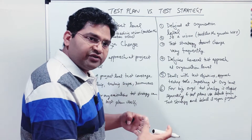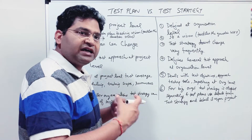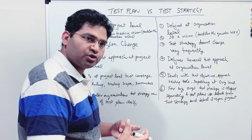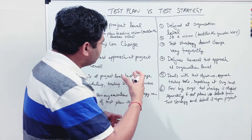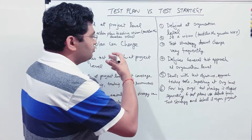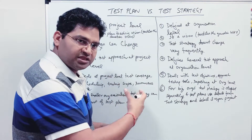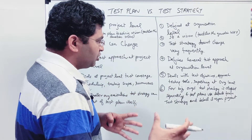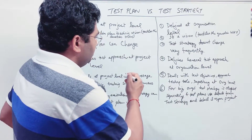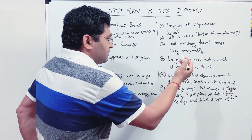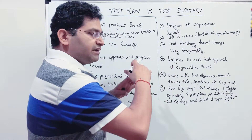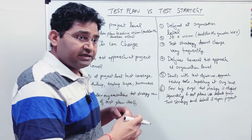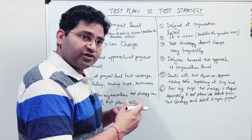When you start writing the test plan, you first write the draft version, then refine it as you get more information from the project. You keep changing the plan as the project progresses. But the test strategy, defined at the org level, doesn't change very frequently — it does change if required, but not often.